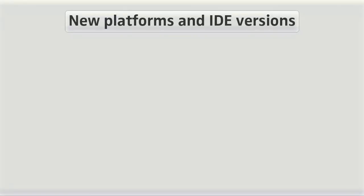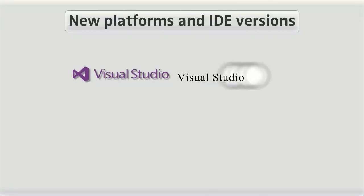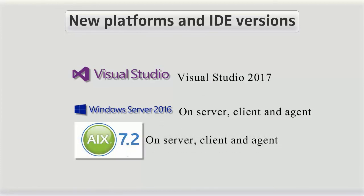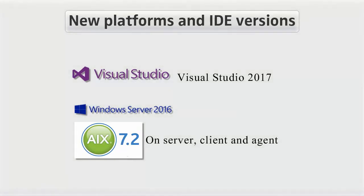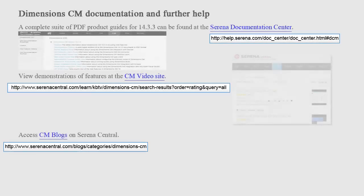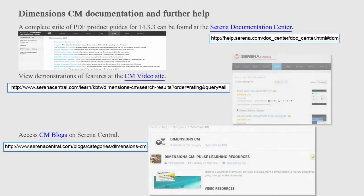Dimensions 14.3.3 further extends platform support including Visual Studio 2017, Windows Server 2016, and AIX 7.2. Please refer to the following links to find out more information about Dimensions CM.